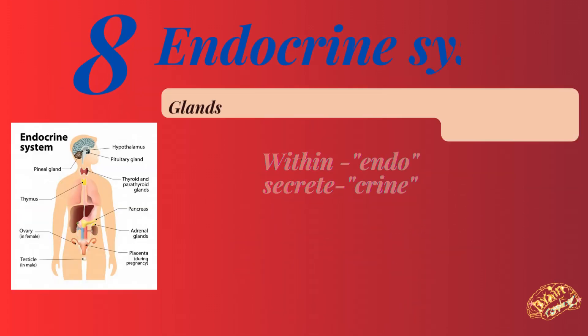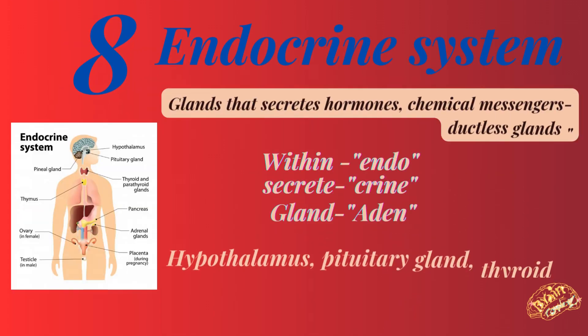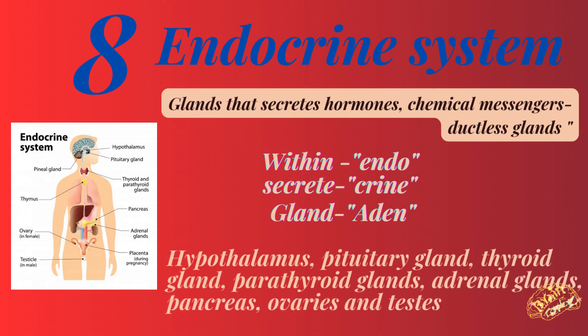Number eight: the endocrine system. It includes glands that secrete hormones, which are chemical messengers. They are ductless glands. 'Endo' means within, 'crine' means secrete, and 'aden' means gland. Endocrine glands include the hypothalamus, pituitary gland, thyroid gland, parathyroid glands, adrenal glands, pancreas, ovaries, and testes.